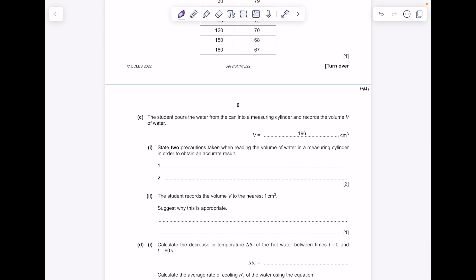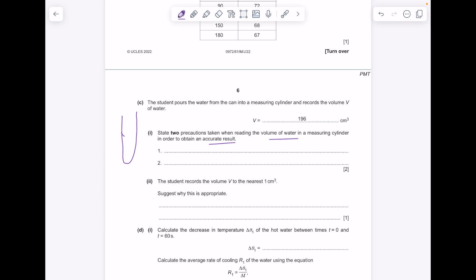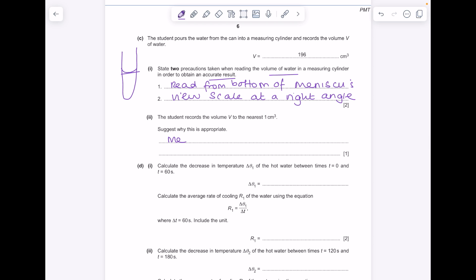The student pours the water from the can into a measuring cylinder and records the volume, it's 196 centimeters cubed. State two precautions when reading the volume of water in a measuring cylinder in order to obtain an accurate result. So remember any liquid will have a meniscus like that, so you want to read from the bottom of the meniscus, which means take that reading there. And then view scale at a right angle. The student records the volume V to the nearest one centimeter cubed. Suggest why this is appropriate—because the measuring cylinder measures to the nearest one centimeter cubed.